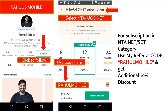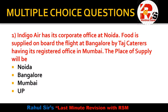Let's start. The first question today is from the topic of Place of Supply. Indigo Air has its corporate office at Noida. Food is supplied on board the flight at Bangalore by Taj Caterers, having its registered office in Mumbai. The place of supply will be — Noida, Bangalore, Mumbai, or UP?